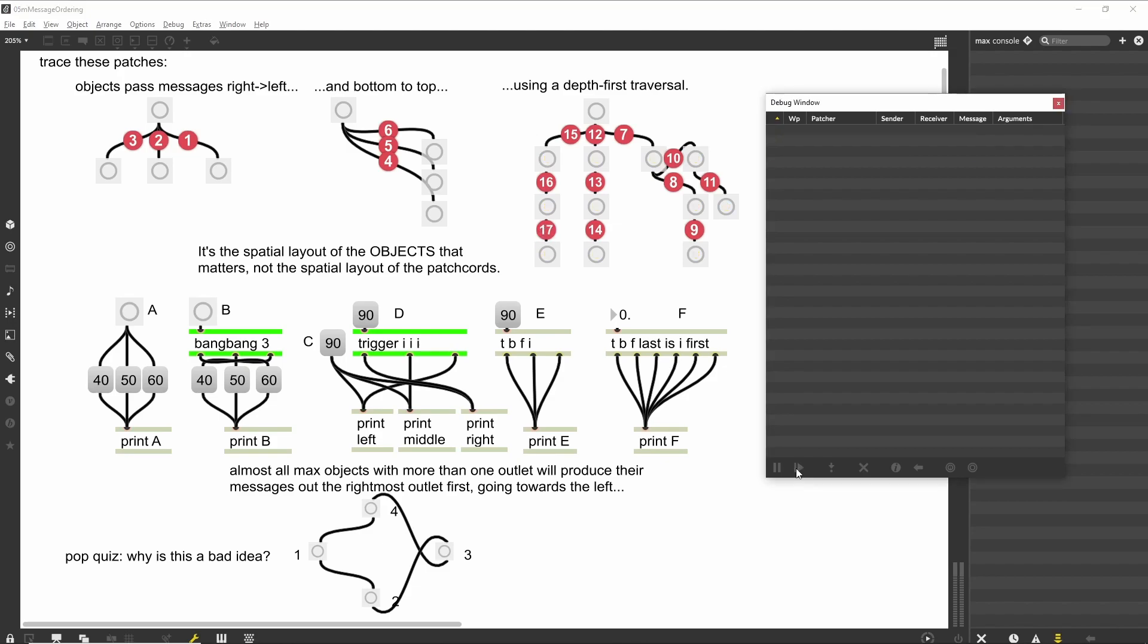To summarize, the message ordering rules in Max are: 1. Right-to-left, or bottom-to-top for objects that are vertically aligned. 2. All actions on a branch are completed before the next branch is activated. Note that for determining the right-to-left or bottom-to-top ordering, it is the location of the connected inlet, not the path of the patch cords, that determines the message route.